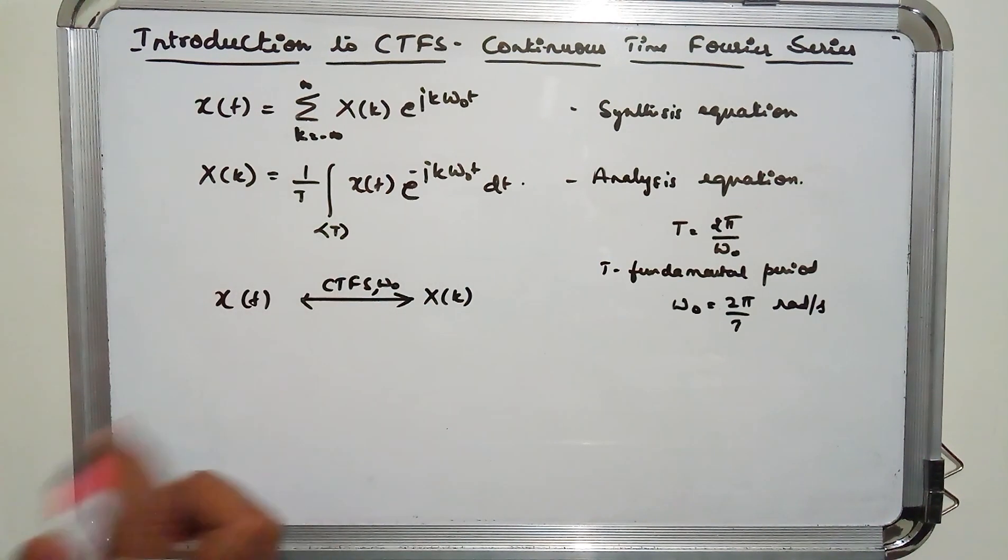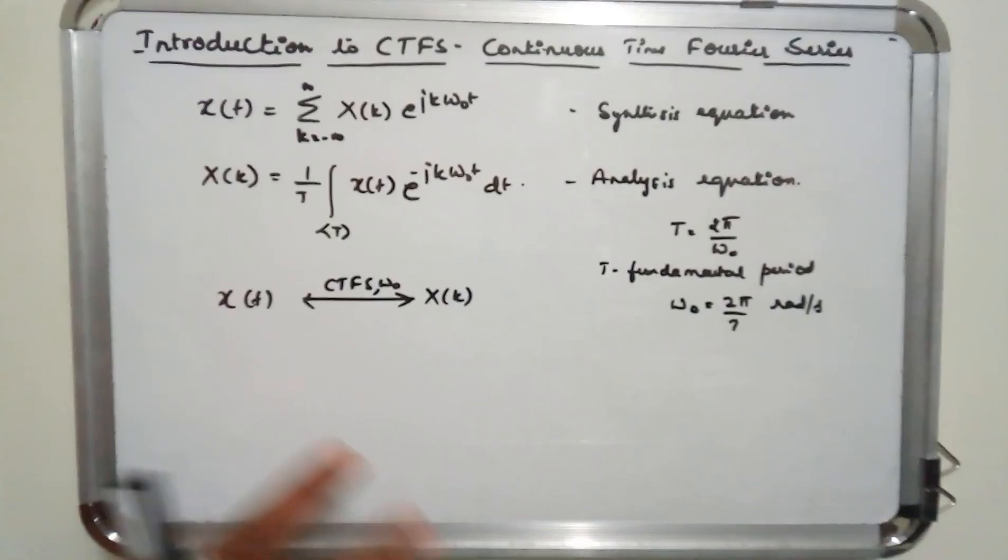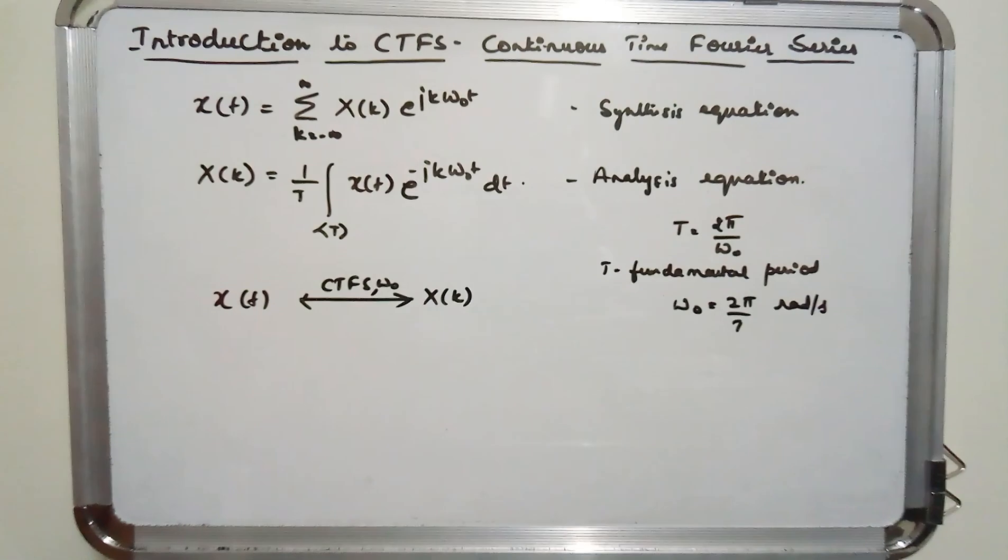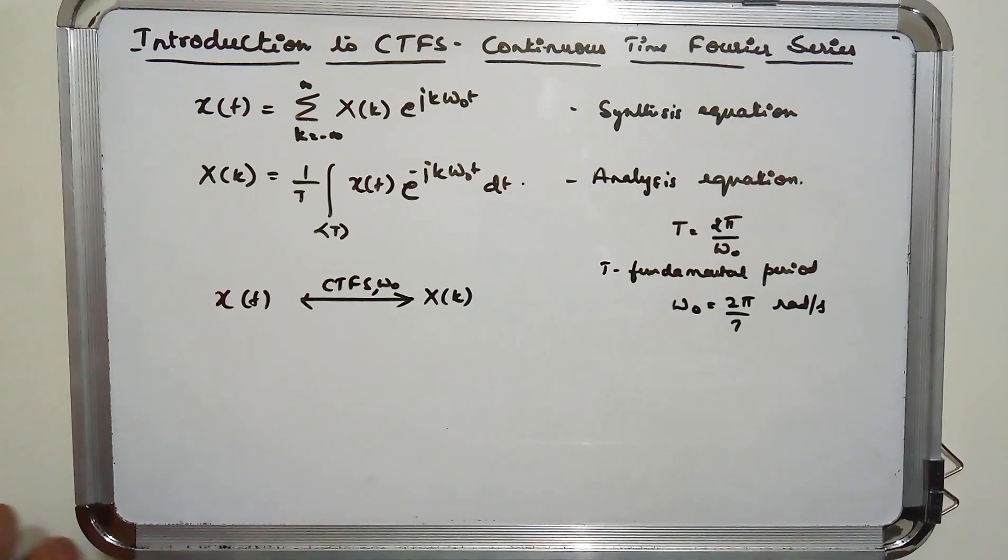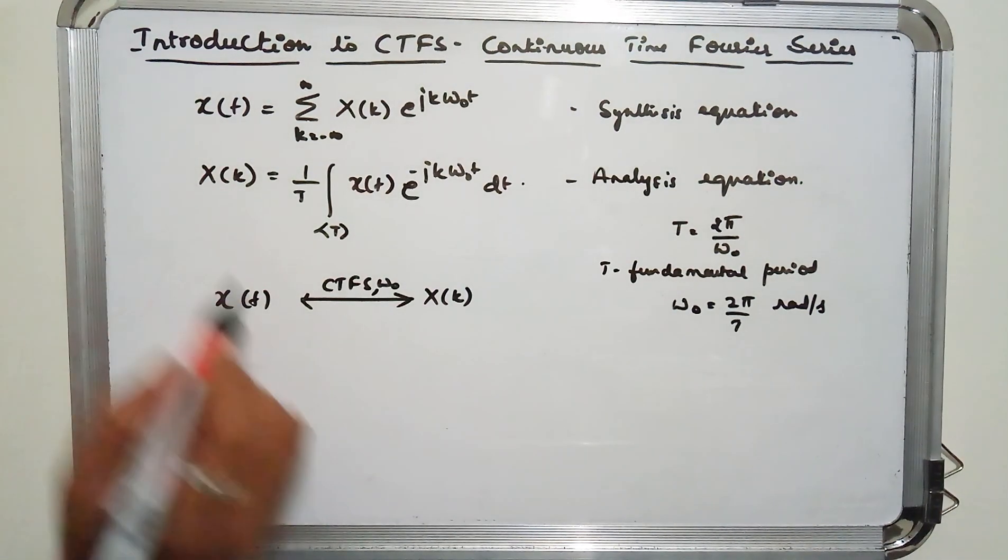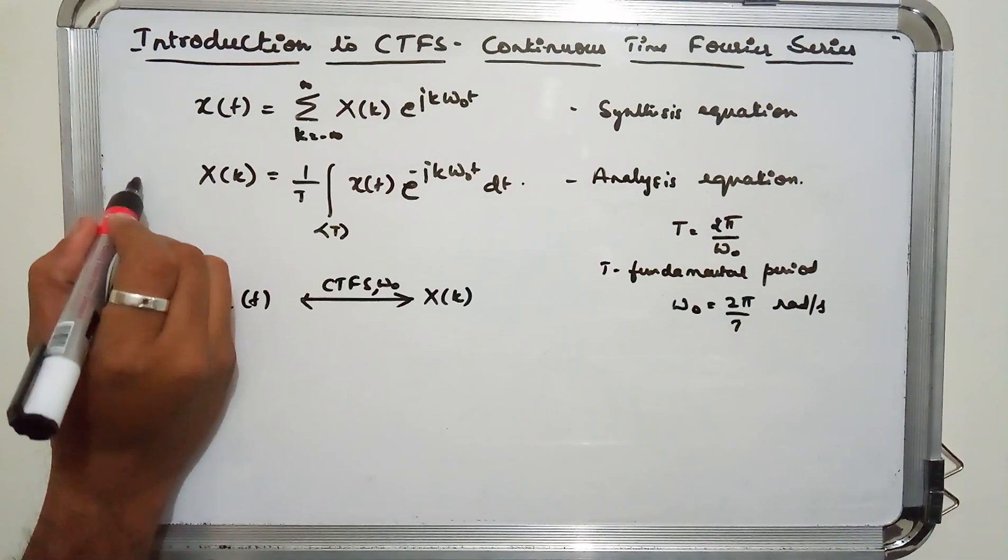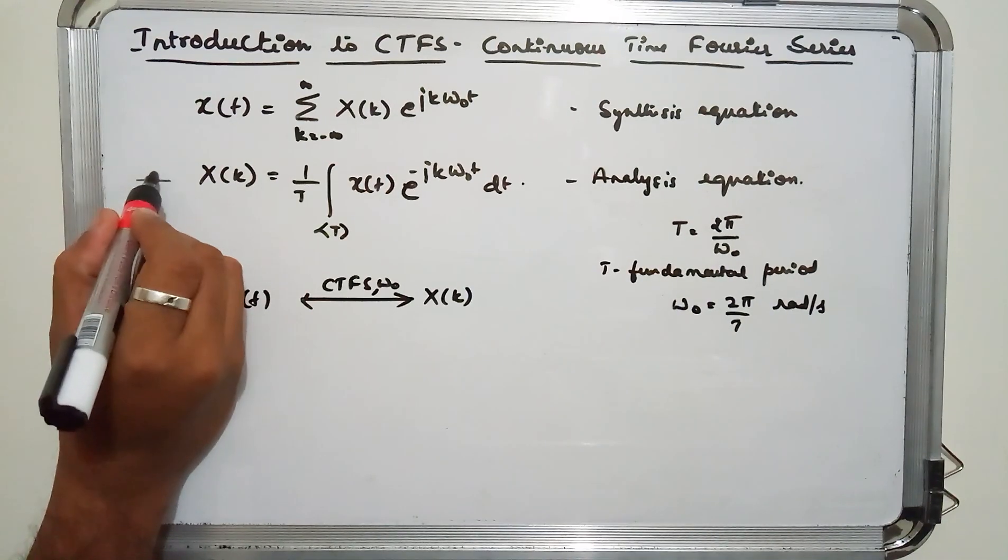Now as usual you will be having two equations. One is direct Fourier series expansion, the other one is the inverse. So if you have X(t), how do you get X(k)? That is given by analysis equation.